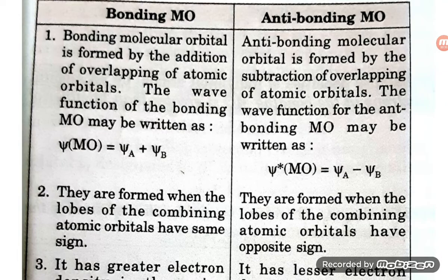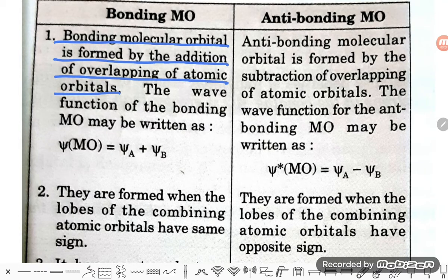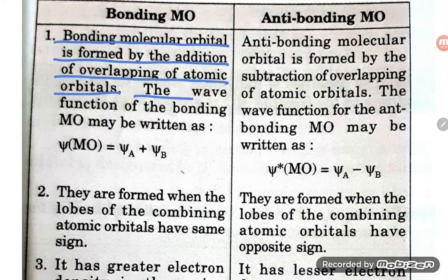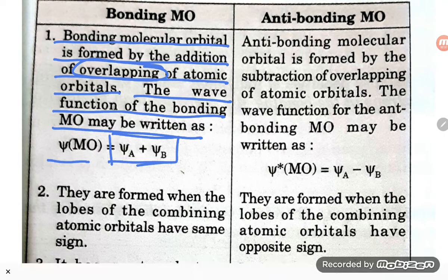When we look at the bonding molecular orbital, the first point is: the bonding molecular orbital is formed by the addition of overlapping of atomic orbitals. The wave function of the bonding molecular orbital may be written as ψ_MO = ψa + ψb. That is the addition overlap happening in the bonding molecular orbital.